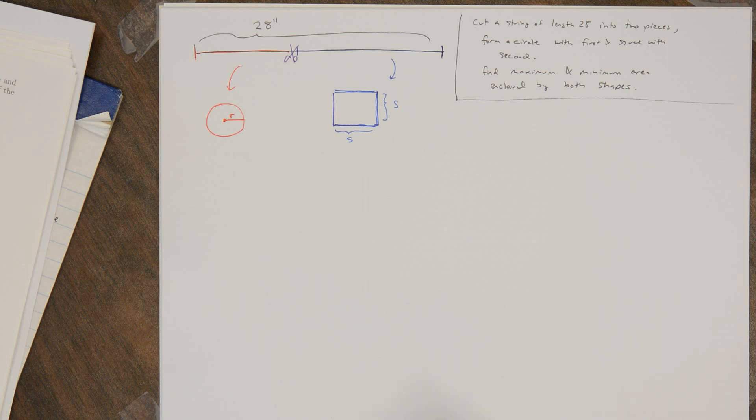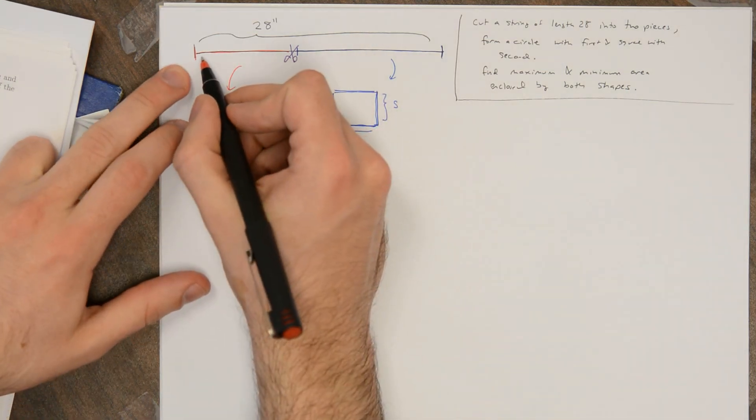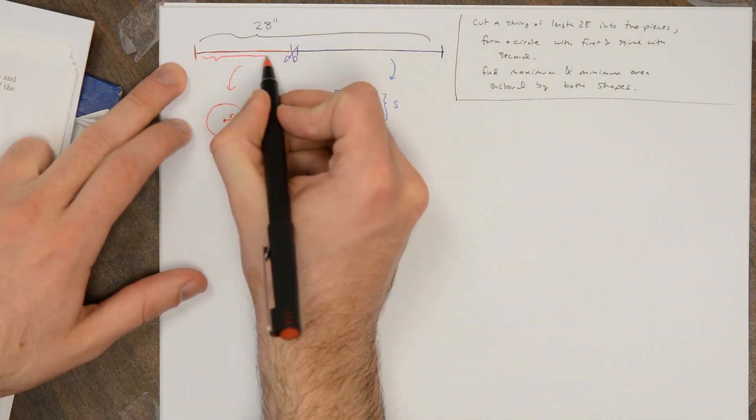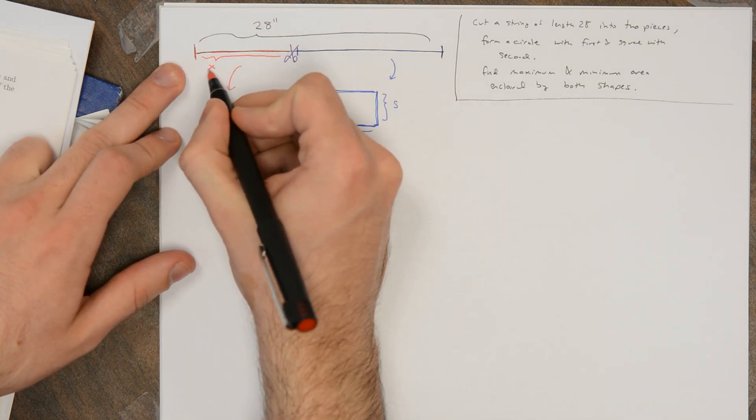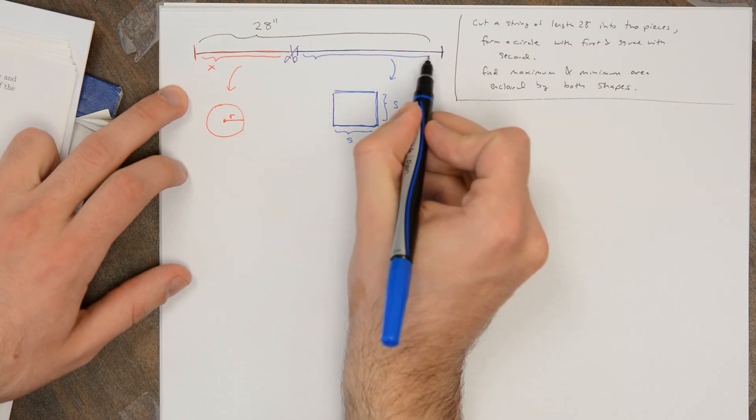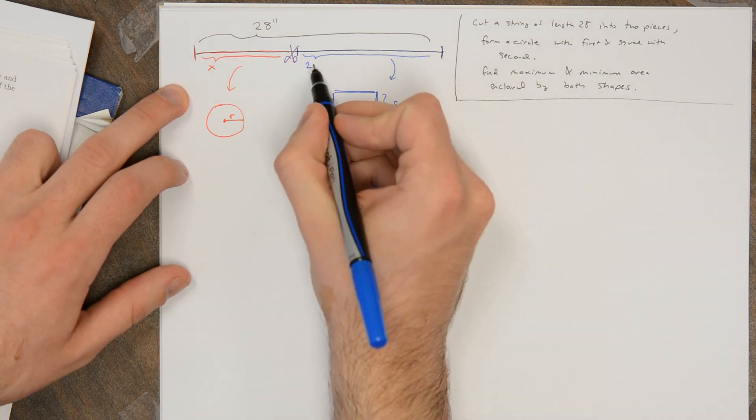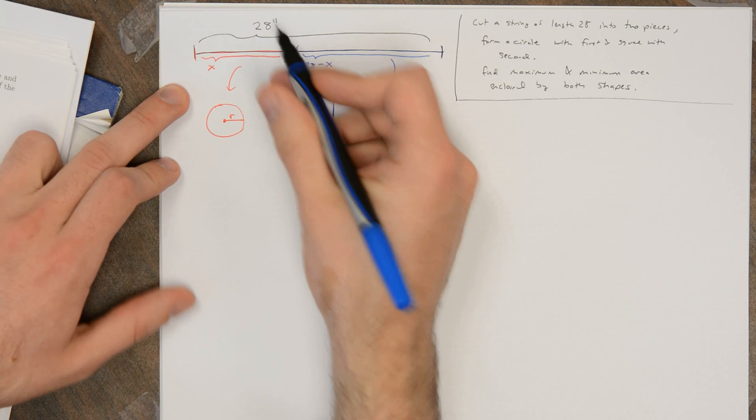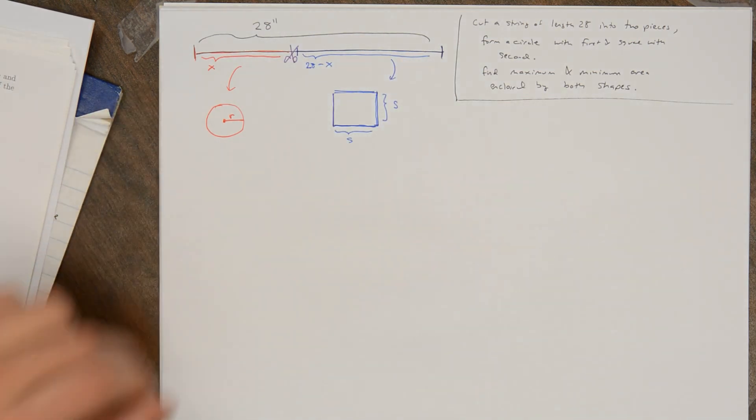So what I'm going to do is call the length that I use for the circle x. And then this remaining piece, the piece that I use for the square, is going to be 28 minus x because there's a total of 28 inches of string.